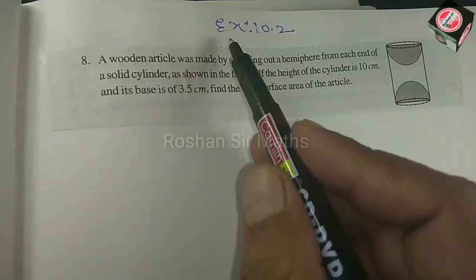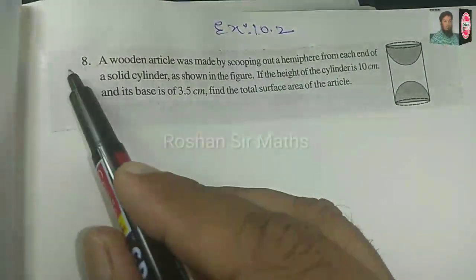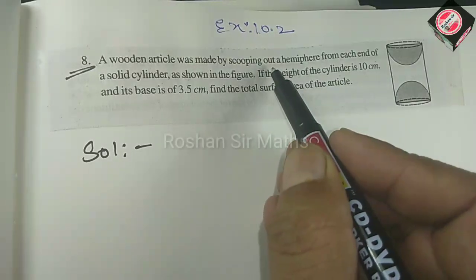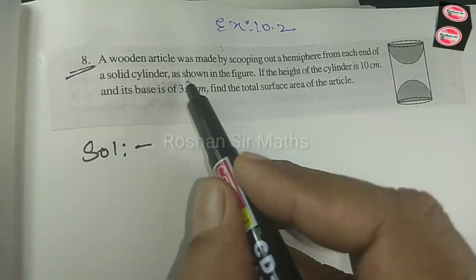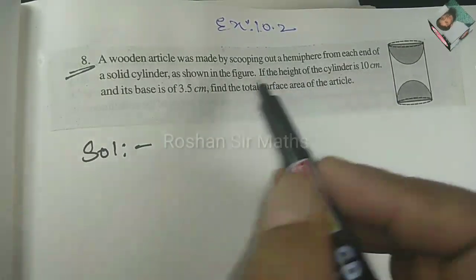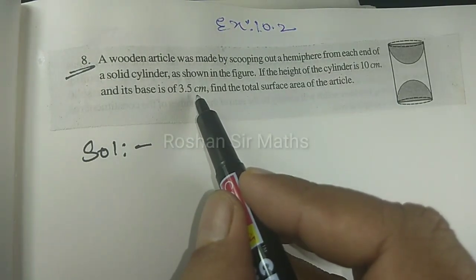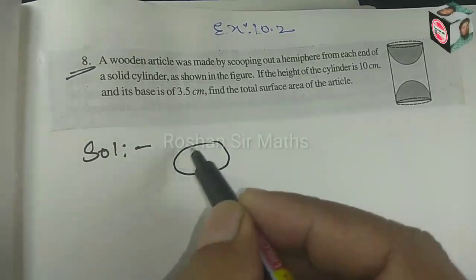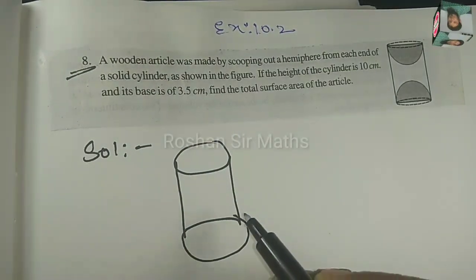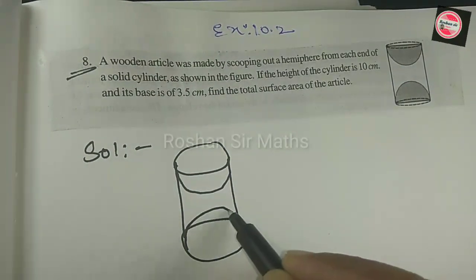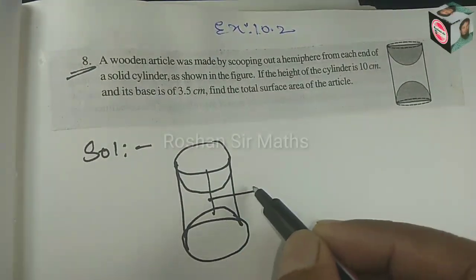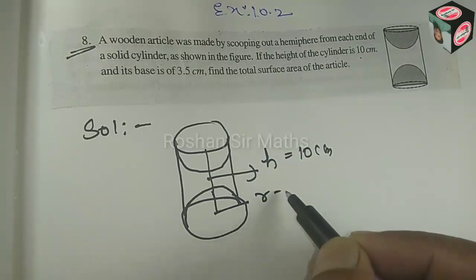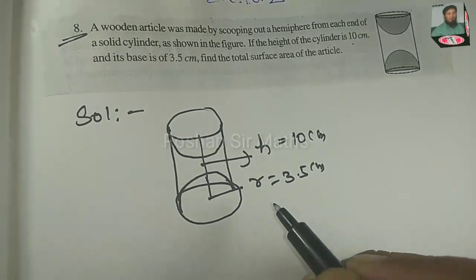Now exercise 10.2, question number 8. A wooden article was made by scooping out a hemisphere from each end of a solid cylinder as shown in the figure. The height of the cylinder is 10 cm and its base radius is 3.5 cm. We need to find the total surface area of the article.